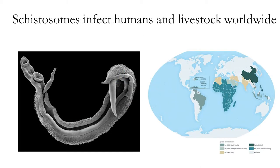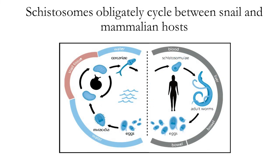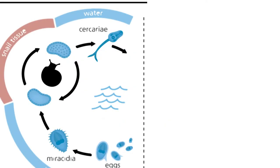I like to examine these ideas in the snail-schistosome system. Schistosomes are parasitic flatworms that infect humans and livestock worldwide and cause the neglected tropical disease schistosomiasis. They have a complex life cycle in which they obligately cycle between mammalian and snail hosts. We're going to focus on the snail side of the life cycle, where a free-living life stage seeks out and enters its snail host, reproduces within it, and then emerges as another free-living stage that seeks out the human host.